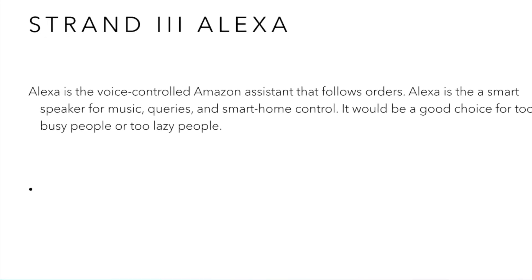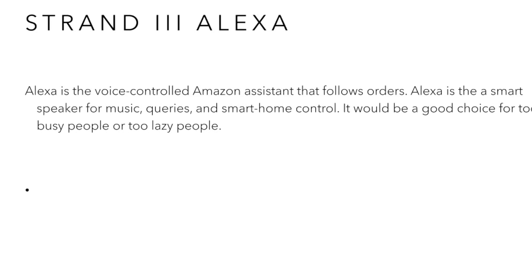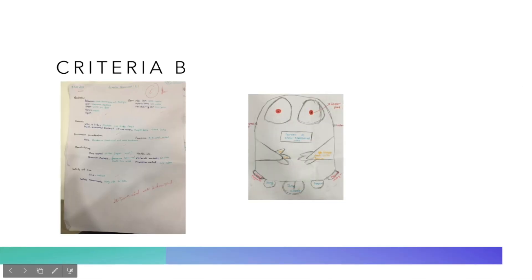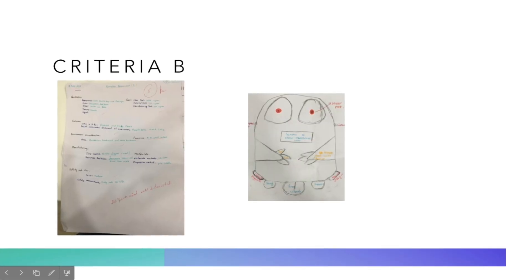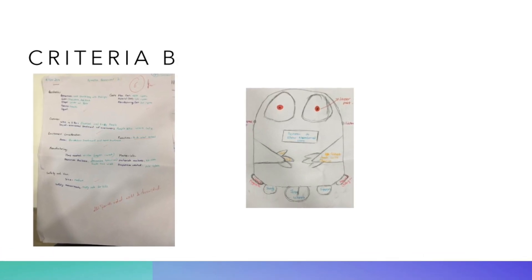Now, in Criteria B, we made a basic structure of the robot, and we also had to write the features.